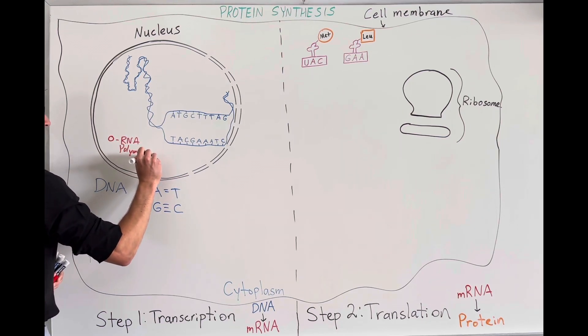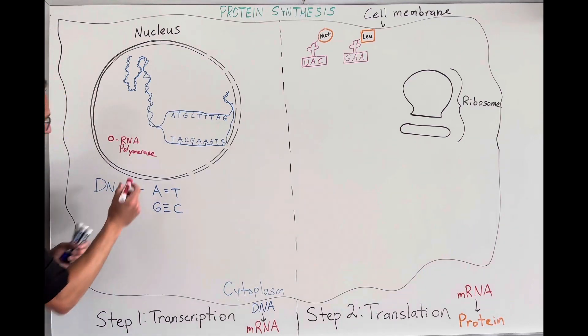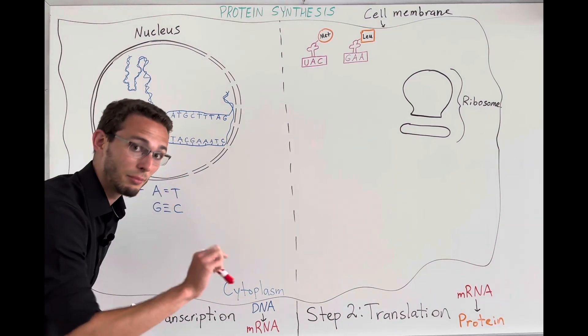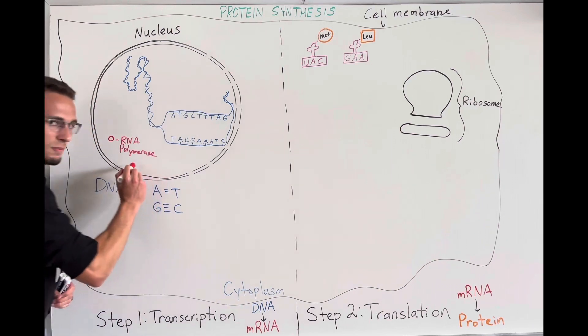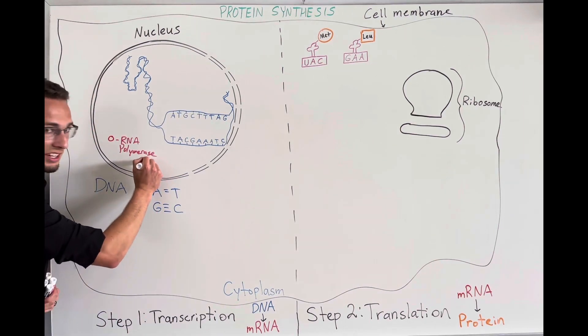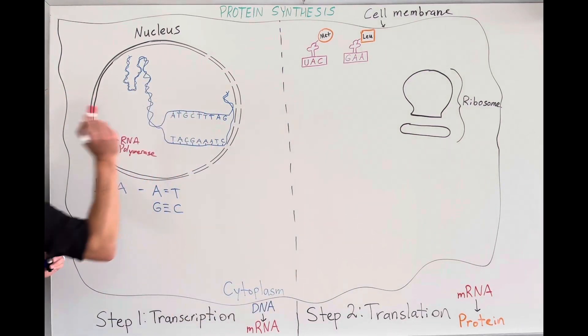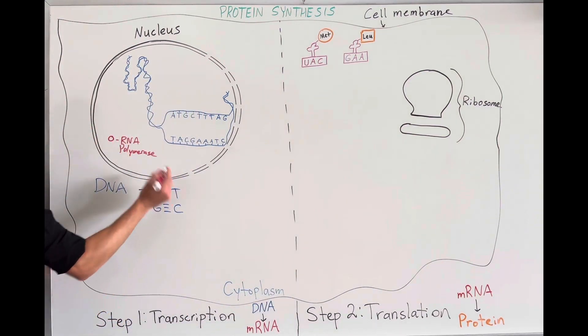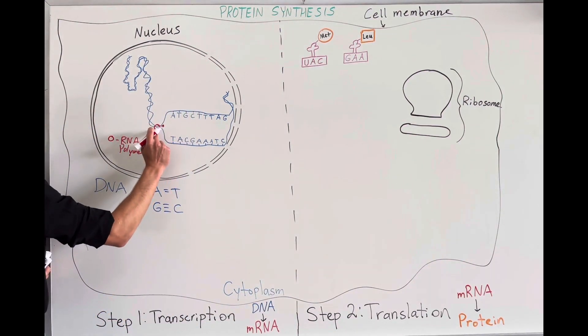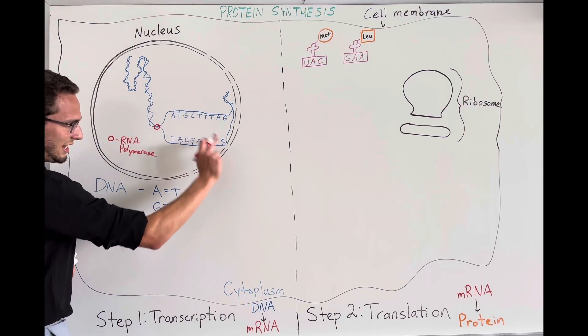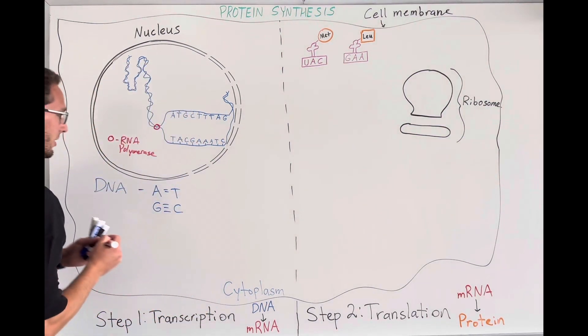I'm going to draw this enzyme as a little circle, and this is going to be called RNA polymerase. If we break this word down, we are going to form a chain of RNA, which is similar to DNA, but it's going to be single-stranded, and polymerase. This means it's an enzyme, ACE, that's going to make a polymer, a long chain of RNA. So this RNA polymerase is going to attach here and begin transcribing this DNA onto mRNA.